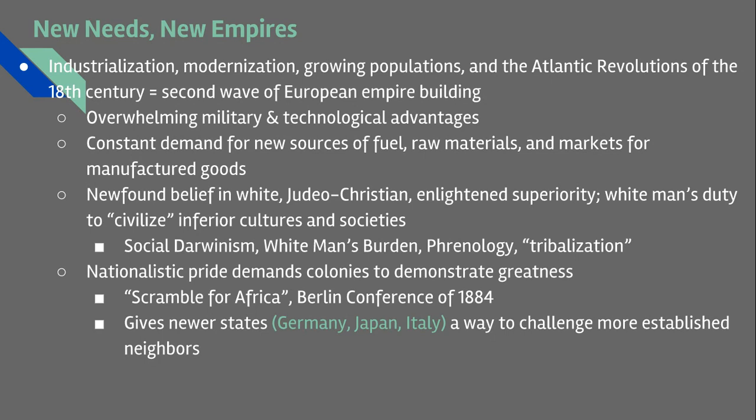Industrialization also creates a constant demand for new sources of fuel, like crude oil for gasoline and coal for steam engines. There's also demand for raw materials, and these demands begin to change as industrialization spreads and diffuses. In the early years of industrialization, coal, iron, and cotton for the textile industry were the main raw materials. As industrialization expands and consumer goods and consumer markets get more varied, new raw materials become the key products that everyone's searching for.